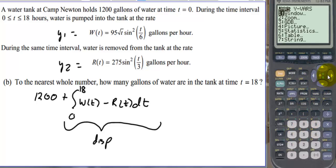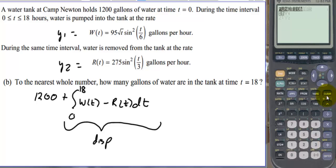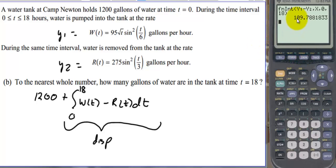We need y1 minus y2, so we go to function y1 minus function y2, comma x, comma 0 to 18. These are pretty complicated functions, so it takes the calculator a little while to calculate. The displacement is 109 gallons.